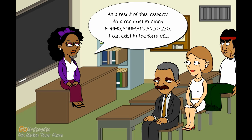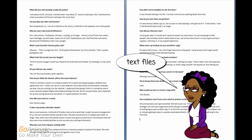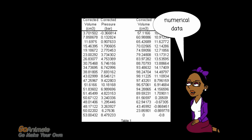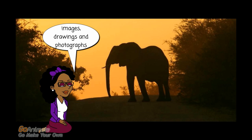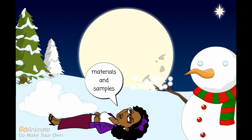Research data can exist in the form of text files, numerical data, images, drawings and photographs, and materials and samples.